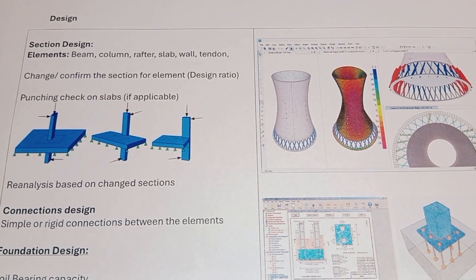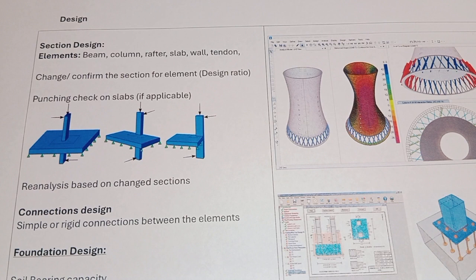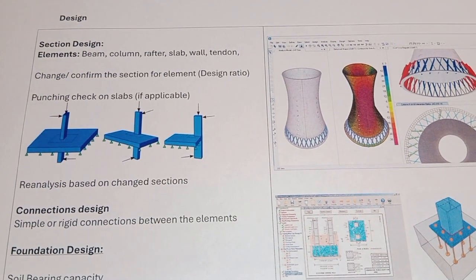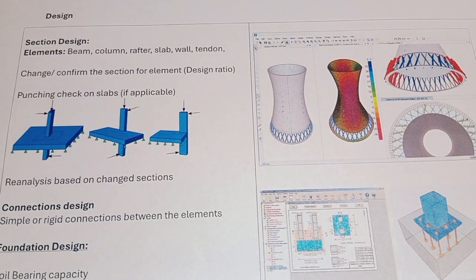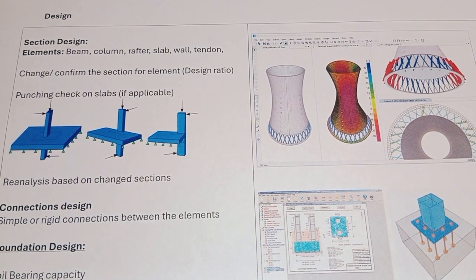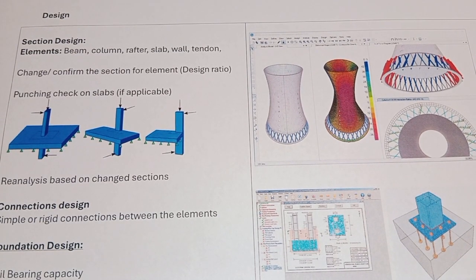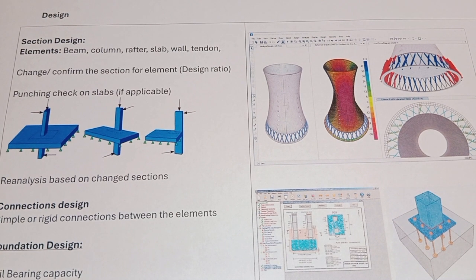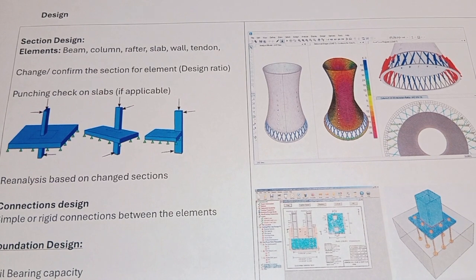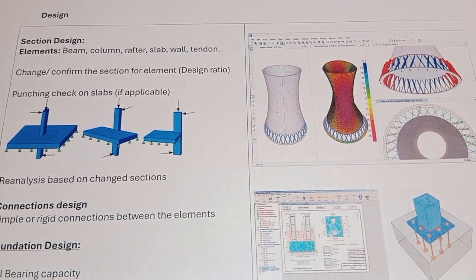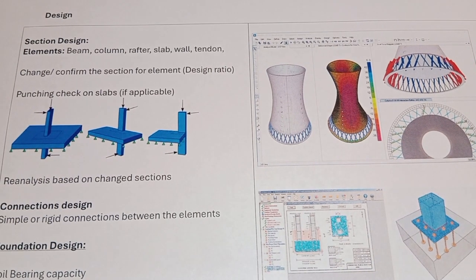In design we generally talk about the section — the cross-sectional area of the element we need to choose and assign for each element to take the load. Element types include beams, columns, rafters, slabs, walls, and tendons. In the analysis stage, we need some default section sizes assigned to members to run the analysis.